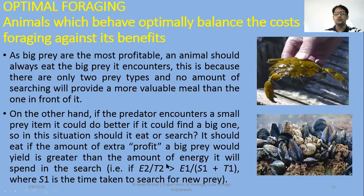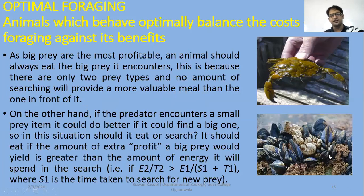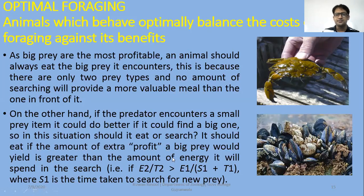The green crab is shown here, and mussels are available in different sizes. There is a profit calculation here — organisms assess the profitability of different prey sizes.